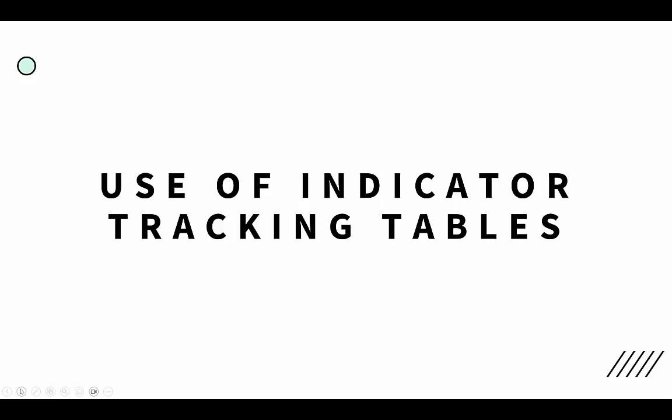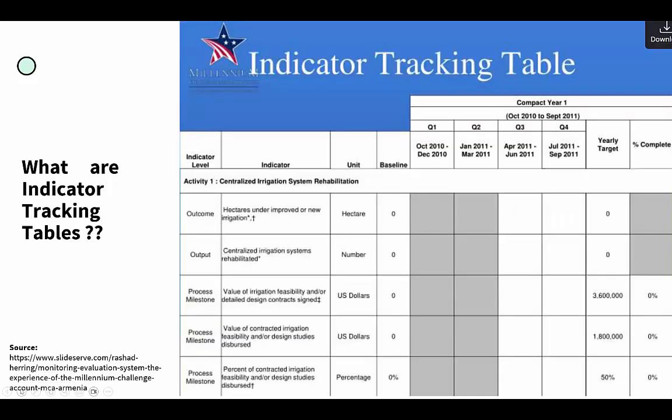I want to talk about a tool that has been used by big organizations such as USAID — and this is the use of indicator tracking tables. Indicator tracking tables are simply what you see in front of you. I've added the source of where I got this tracking table; I referenced it, so that's fine. If you look at the indicator tracking table, what do you see?